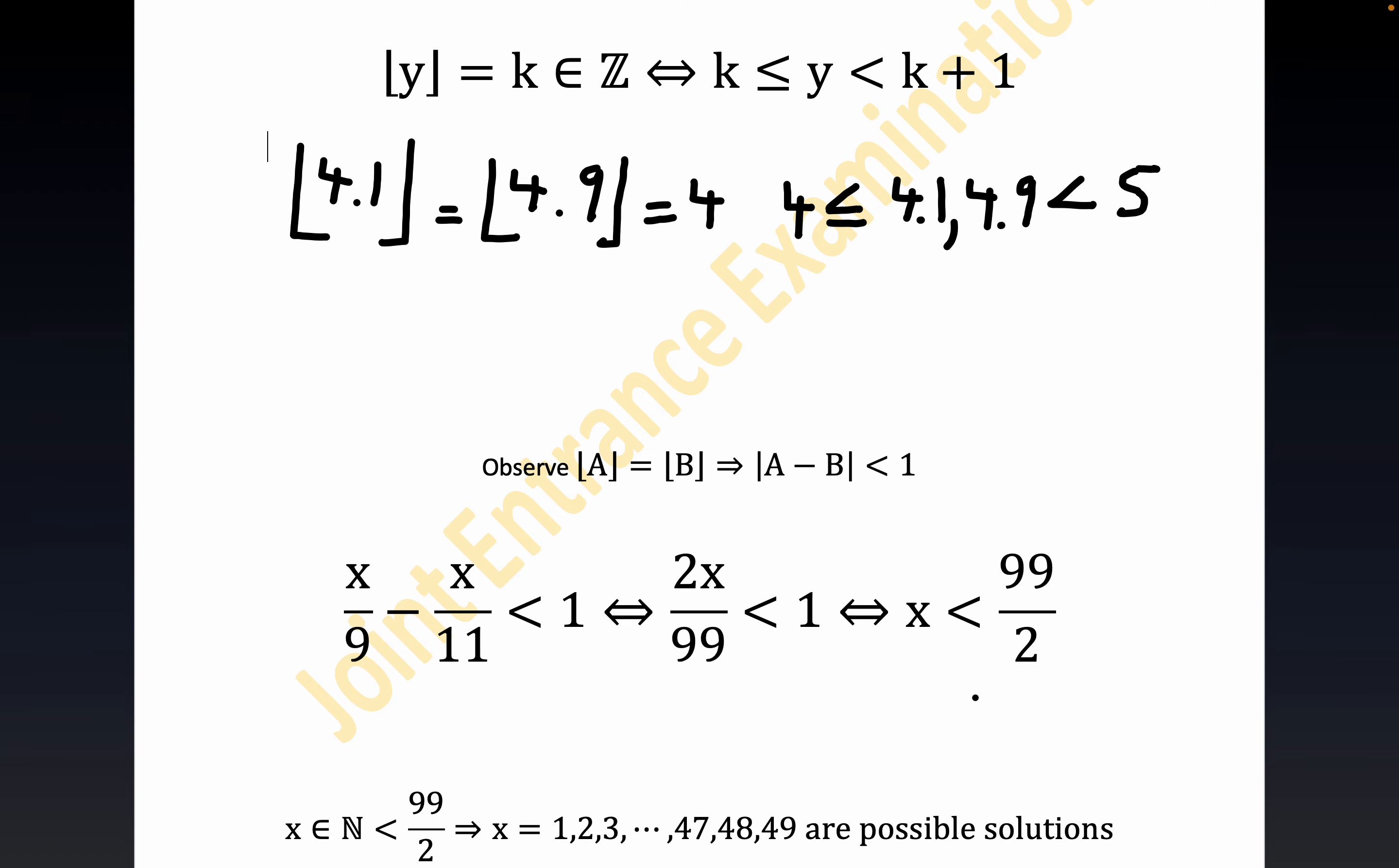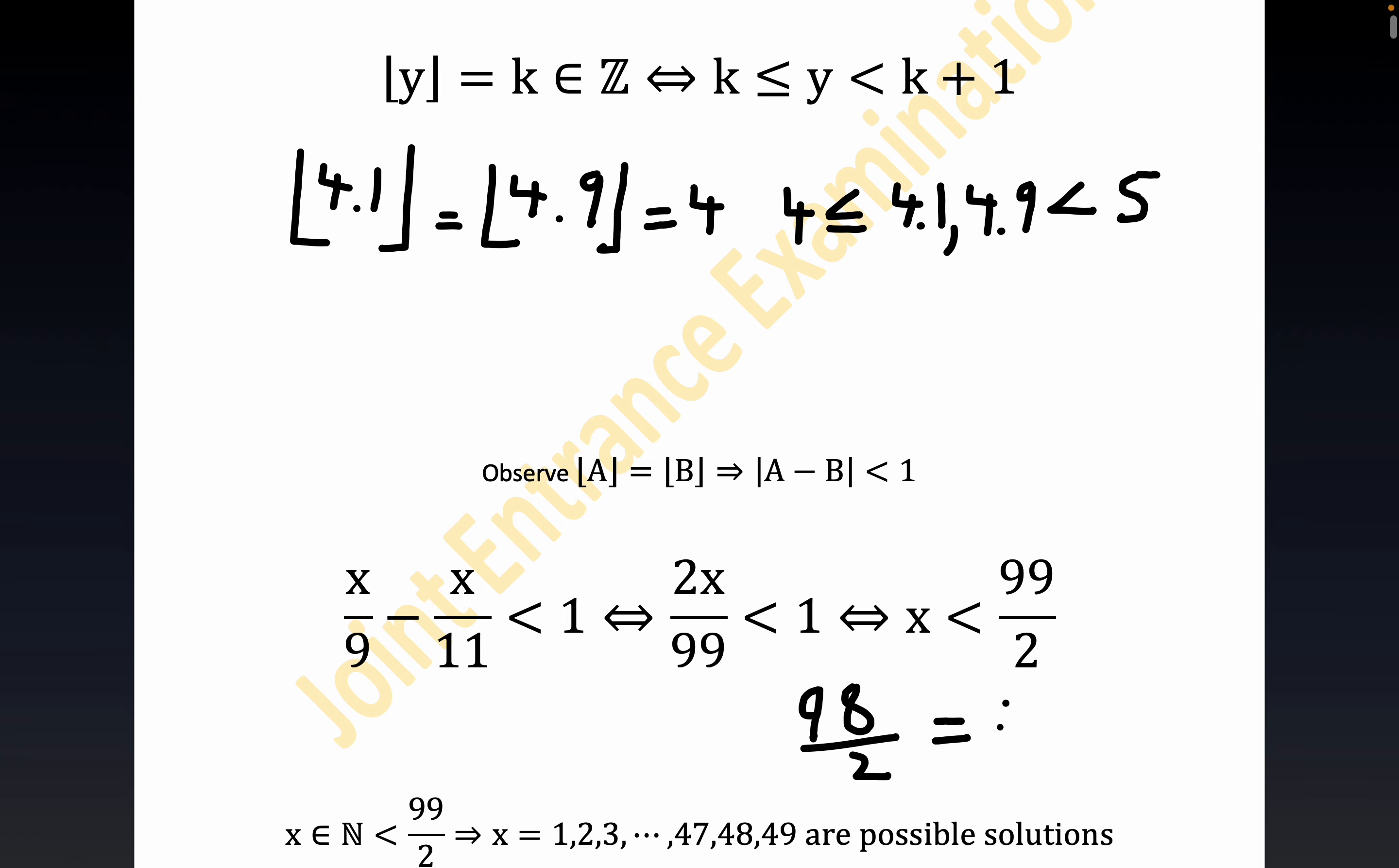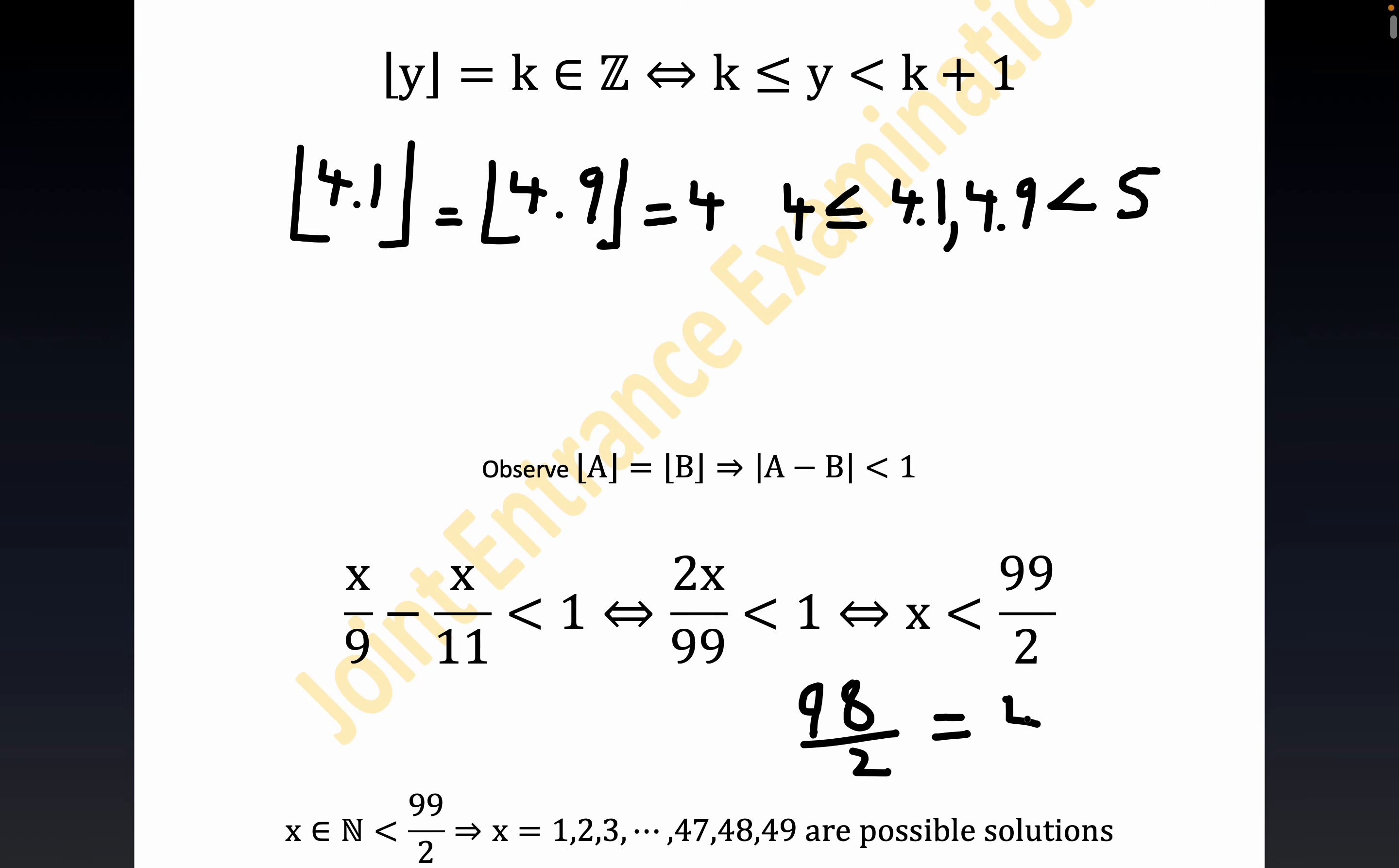So we get that x is less than 99 over 2. But 99 over 2 is certainly not an integer, but 98 over 2 is. So 98 over 2 would fall in this interval—98 over 2 is the first integer in this interval, and 98 over 2 equals 49. So you see, 49 is our answer because we're just looking for an upper bound to the solution set.